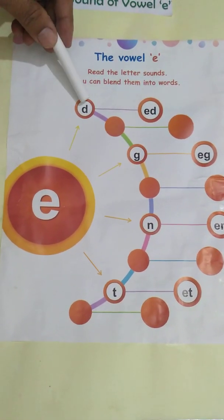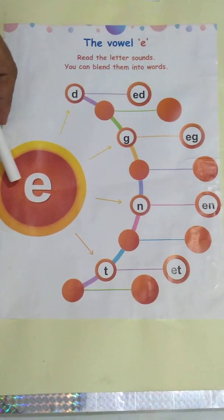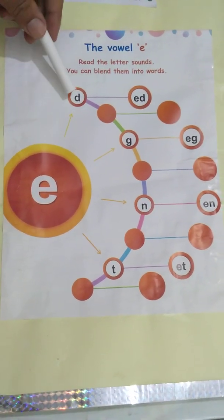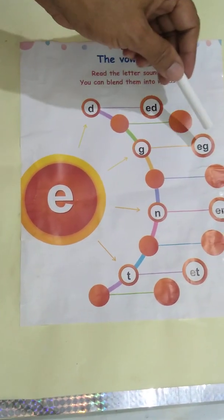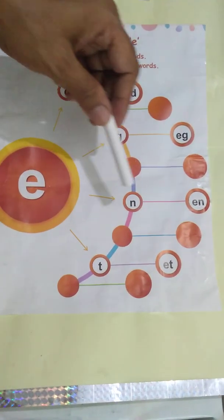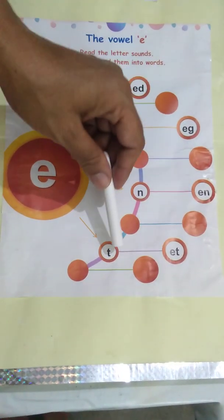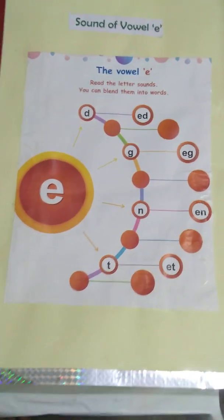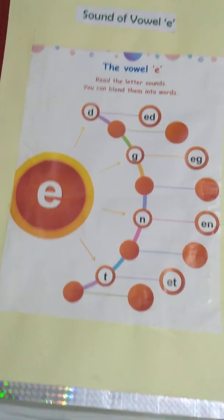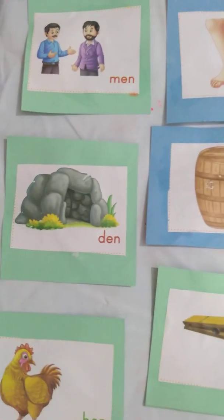The phonetic sound of E is 'E'. E-D: Ed. E-G: Eg. E-N, E-M, E-K, E-L. Let us now read with the pictures.